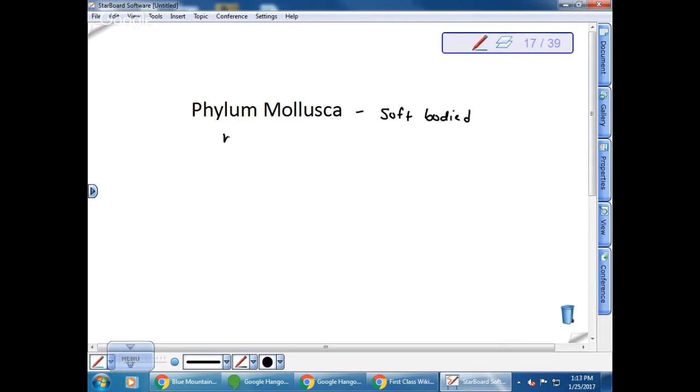This is the most diverse phyla in terms of all the different kinds of organisms that are found in them. If we look at the diversity, we have clams, squid, snails, slugs. I think I'm missing one. Things like oysters. Anybody else think about what might be in here? What would you add to that list? Octopus, excellent.